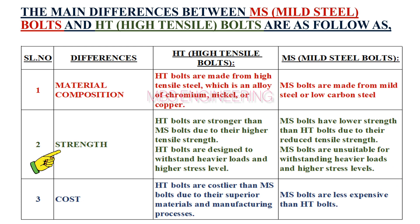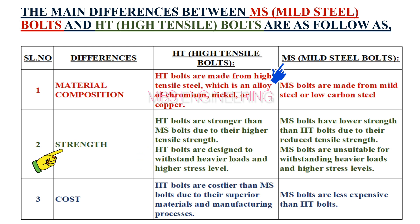Second, we will consider the strength. HT bolts are stronger than MS bolts due to their higher tensile strength, and are designed to withstand heavier loads and higher stress levels. MS bolts have lower strength than HT bolts due to their reduced tensile strength, and are unsuitable for withstanding heavier loads and higher stress levels.